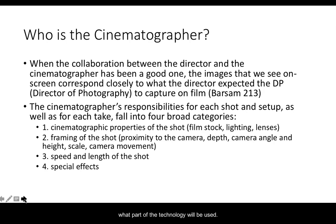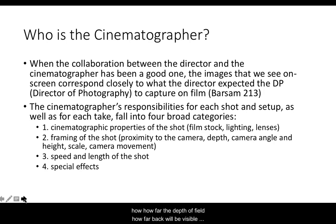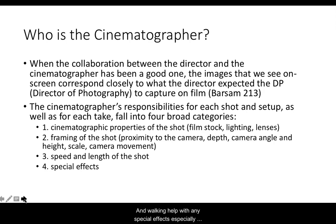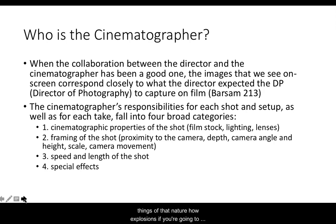The framing of the shot — how close actors or objects will be to the camera, how far the depth of field, how far back will be visible and in focus. Camera angles, height, scale, camera movement. The speed and length of a shot, including slow motion or sped up effects. And the cinematographer will often help with any special effects, especially practical effects — things done in front of the camera — such as how makeup will look on an actor, or how explosions will look on film.